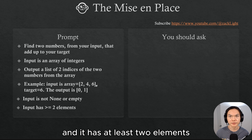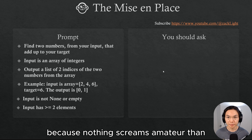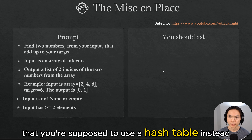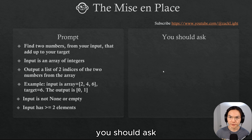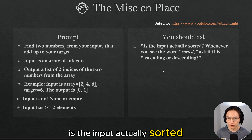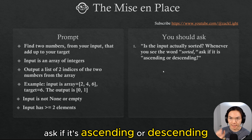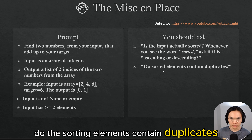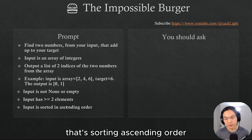They might say yes, you can select the same element twice, and it has at least two elements. Are we good now? Not yet — because nothing screams amateur like spending 15 minutes on your binary search solution only to realize you were supposed to use a hash table instead. You should ask: is the input actually sorted? Whenever you see the word 'sorted,' ask if it's ascending or descending. Do the sorted elements contain duplicates? Then you're given additional information: sorted in ascending order.